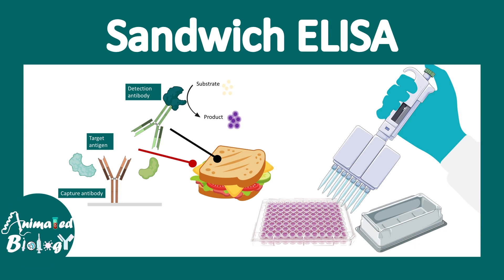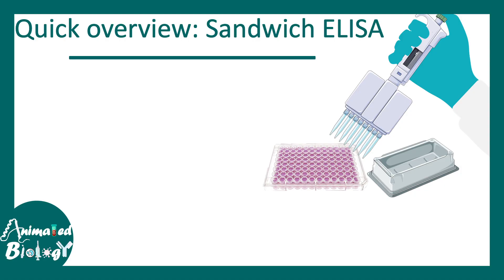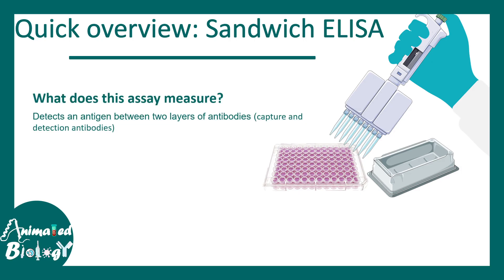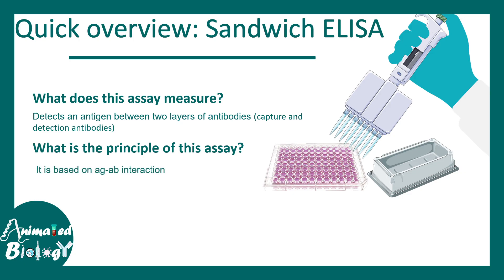In this video we'll talk about sandwich ELISA. Other videos covering different types of ELISA are linked in the i-button. Let's have a quick overview of sandwich ELISA. This assay measures antigen which is sandwiched between two layers of antibodies, so overall we are looking at antigens. The principle of this assay is based on antigen and antibody interaction.